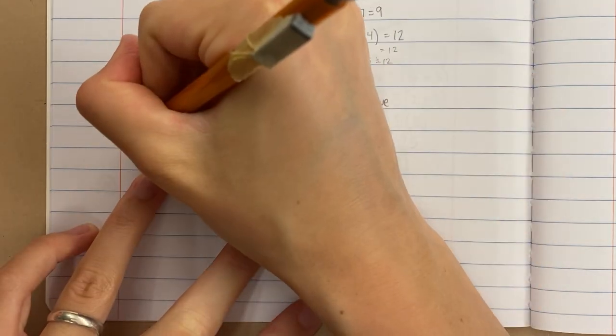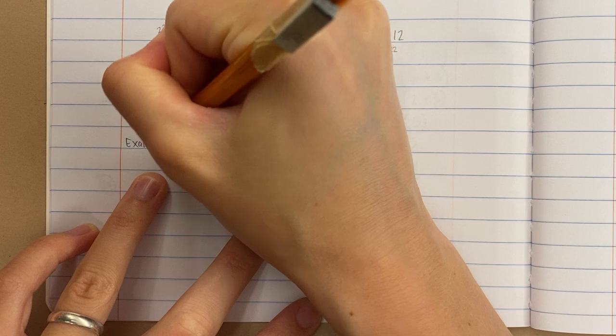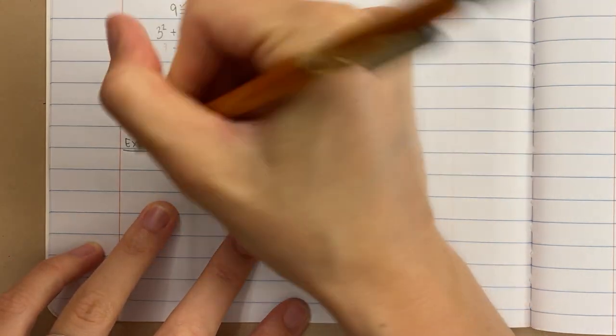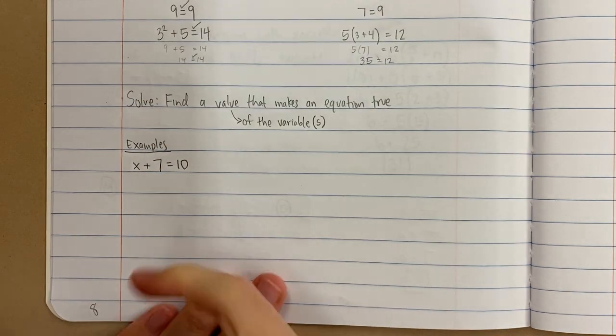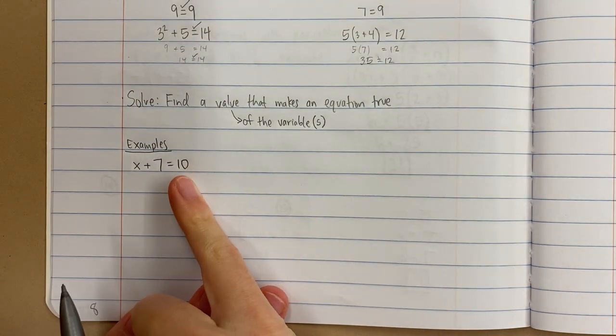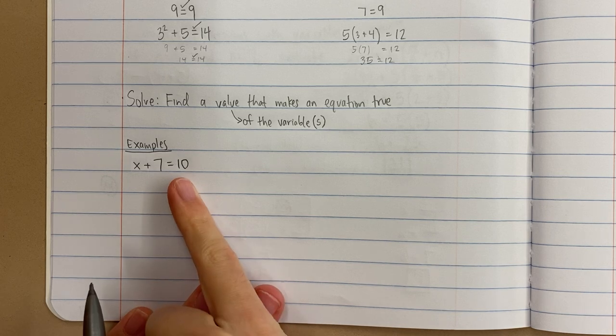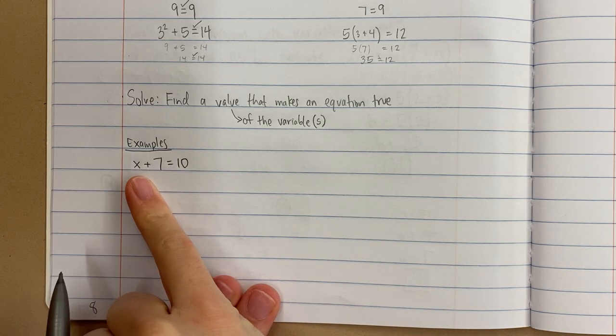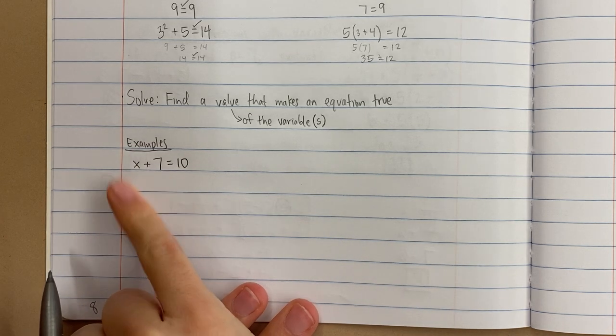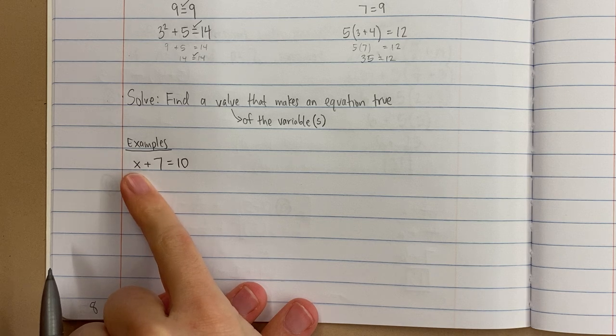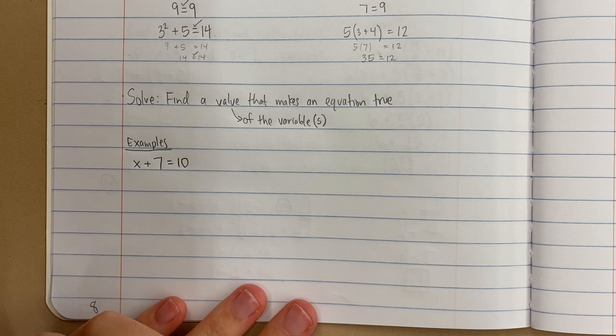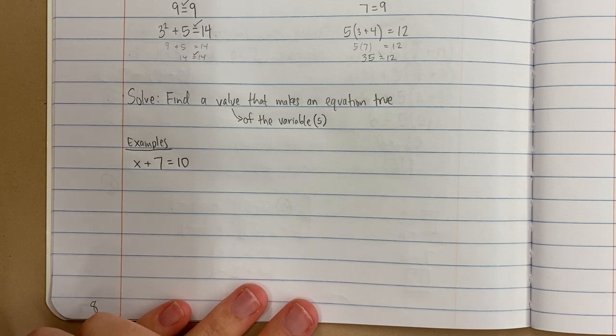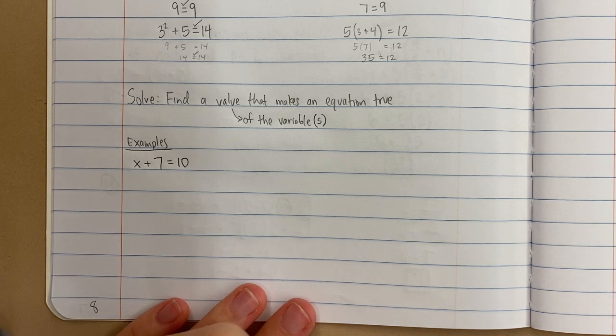So here's some examples. x plus 7 equals 10. What value of x makes this equation true? Remember, in order for it to be true, this side is equal to 10, the other side has to be equal to 10 as well. So what value could I put here for x that would make x plus 7 equal to 10? You might just think what number plus 7 equals 10? Oh, it's 3. You can do it that way.